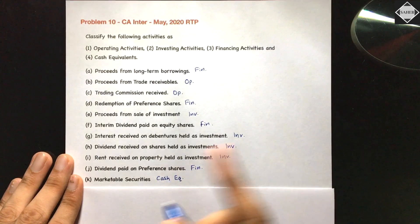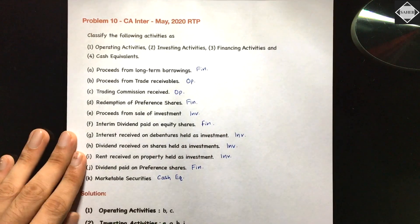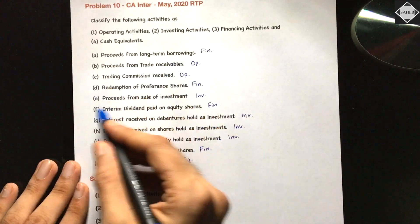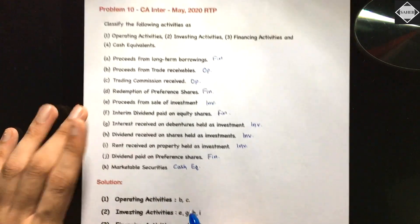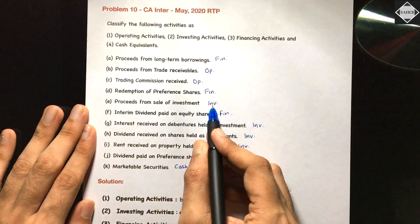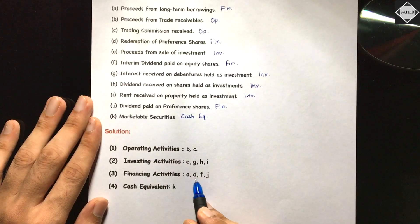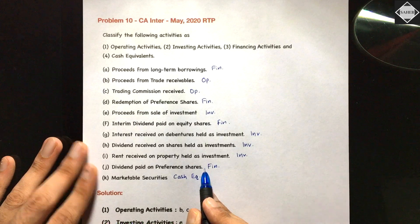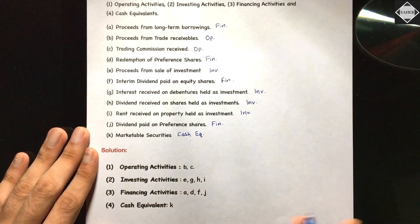Dividend paid on preference shares is always financing — it doesn't matter whether preference or equity, final or interim. Marketable securities: assume cash equivalent (maturity less than or equal to three months, highly liquid, insignificant risk). Final answers: operating activity — items B and C; investing activity — items E, G, H, I; financing activity — items A, D, F, J; cash equivalent — marketable securities (item K).